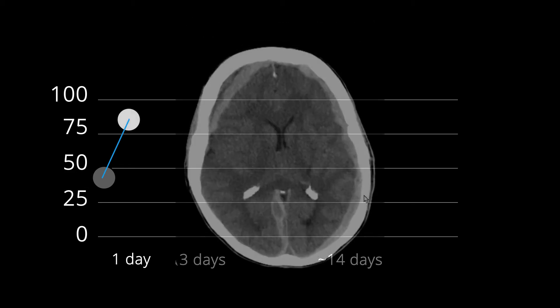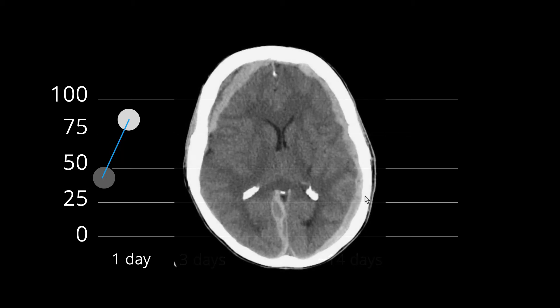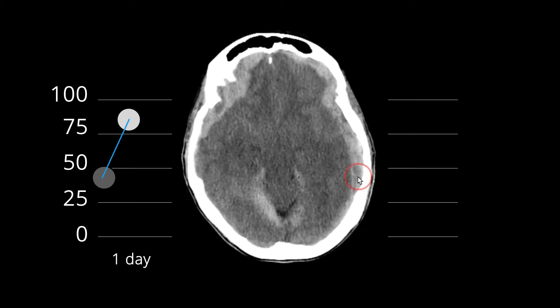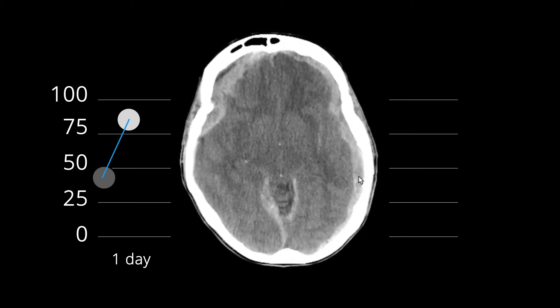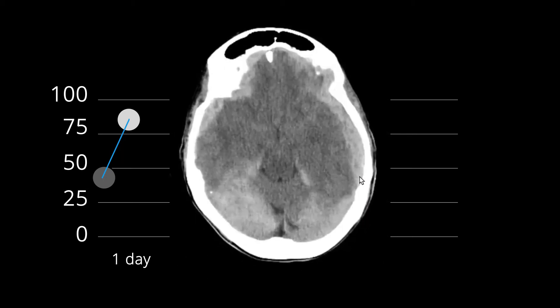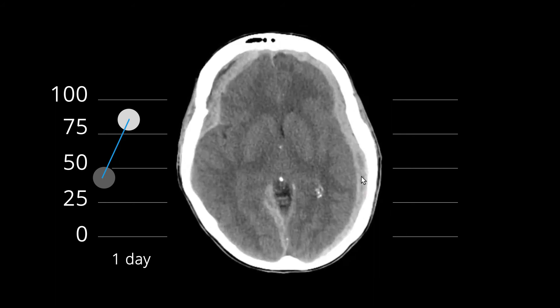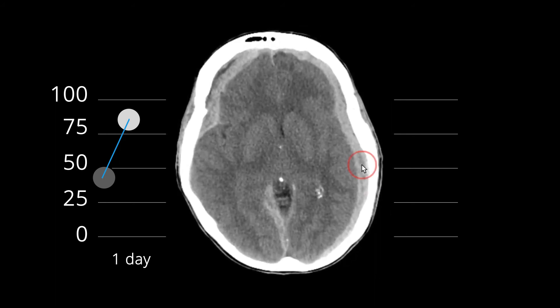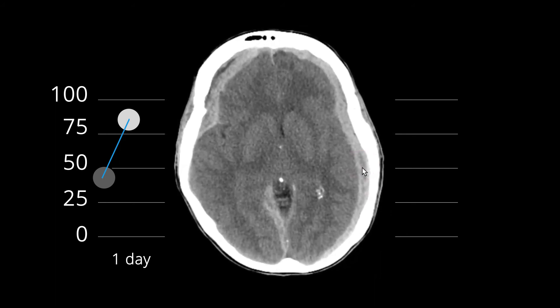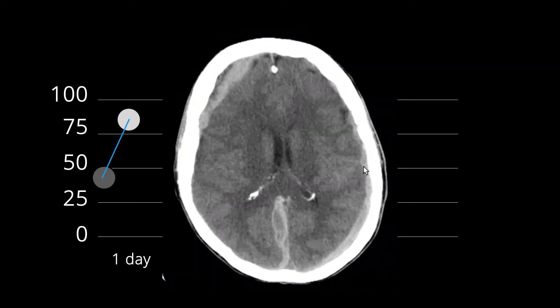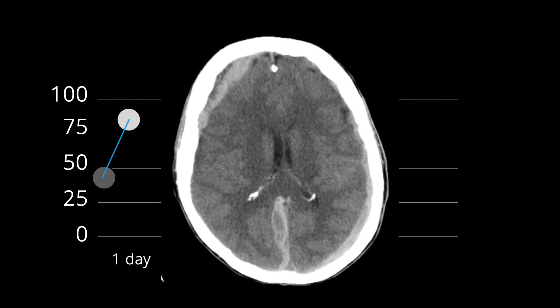Here is an example of an acute hemorrhage. Notice the areas of low attenuation mixed in with the areas of hyperattenuation. This finding is suggestive of hyperacute blood products mixed in with acute clotted blood.